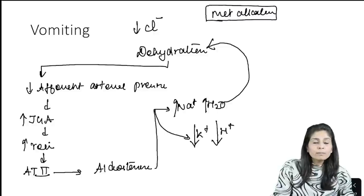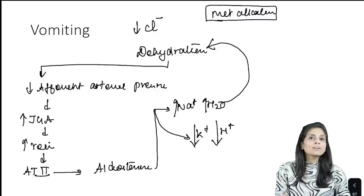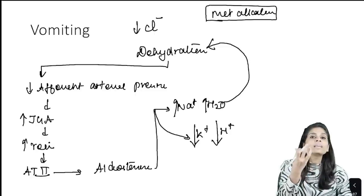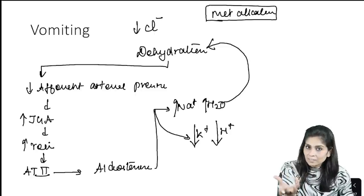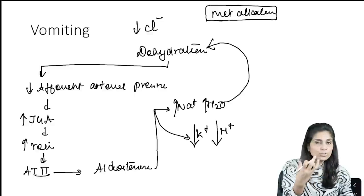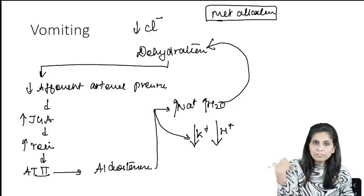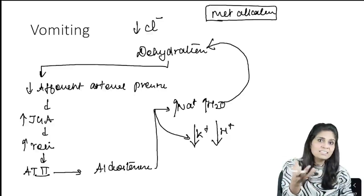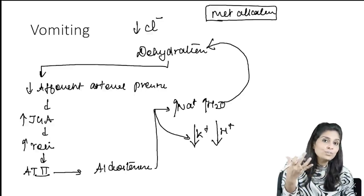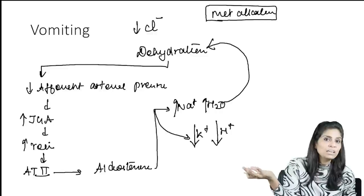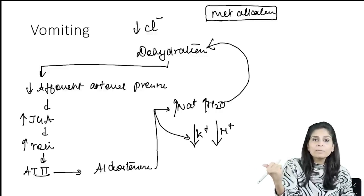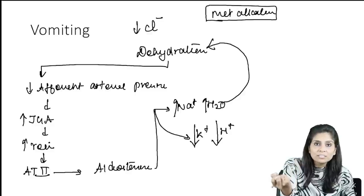Many students think that metabolic alkalosis from vomiting is because a person is vomiting out gastric acid. However, gastric acid is not a component of the blood, and gastric acid secretion is not sufficient to that extent to cause metabolic alkalosis. So what is the actual reason for metabolic alkalosis in vomiting? It is because of dehydration.